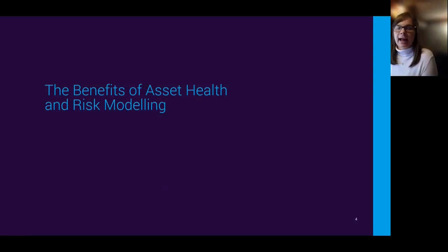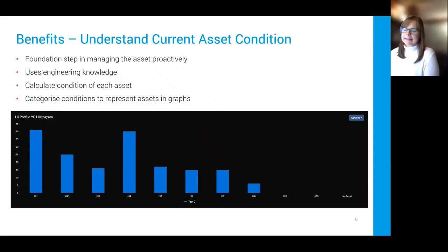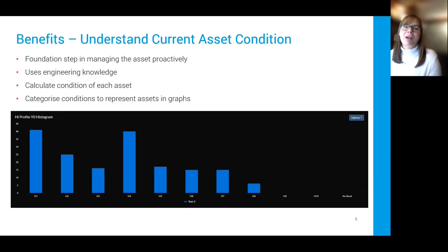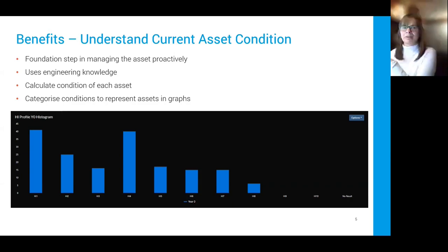On the benefits of asset health and risk modeling: there's a big variation of people on the call today with potentially lots of different backgrounds, so we might be covering some ground or cementing thoughts you've already got. Some of you might already be doing this proactively. The first core benefit is understanding the current asset condition — you can't proactively manage your assets unless you understand the information about them and what condition they're in. This is what we class as the foundation step.